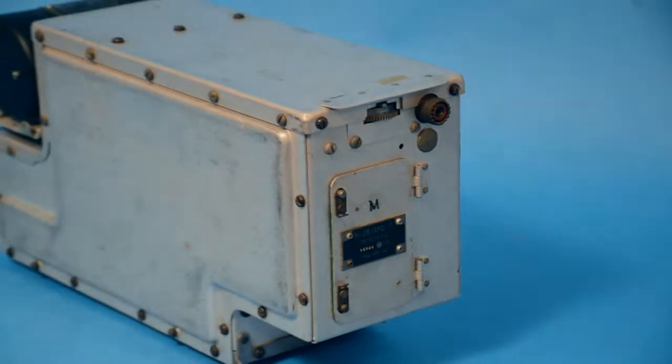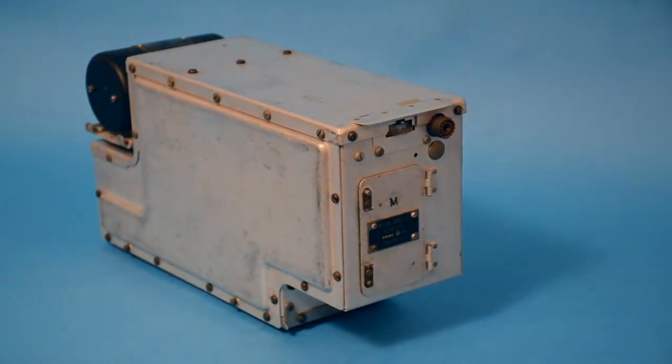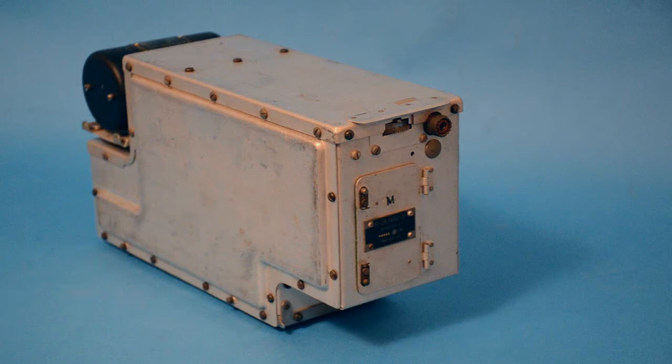Whilst the standard ARC-5 HF receiver cases were coloured black, the VHF version was aluminium and mounted separately and was significantly larger.